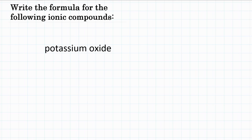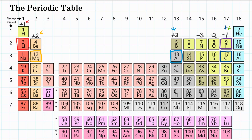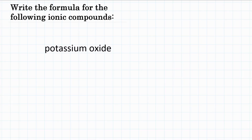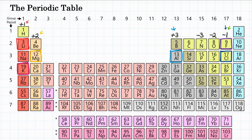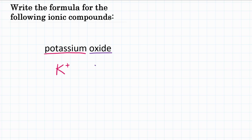Next: potassium oxide. Looking at the periodic table, potassium is in the first group — positive one. Oxide is just oxygen, which is in group 16 and becomes negative two. With a positive one and a negative two, we need two potassiums, so the formula is K₂O.